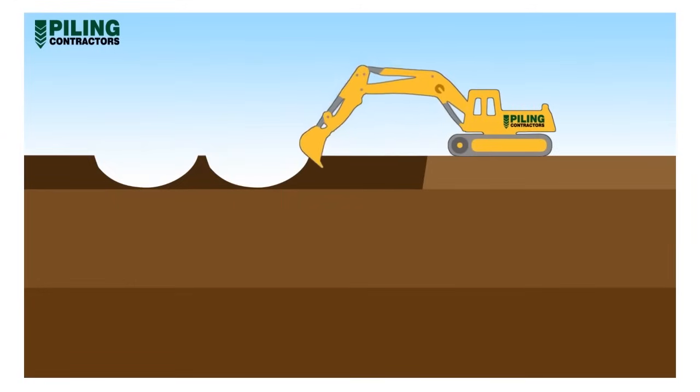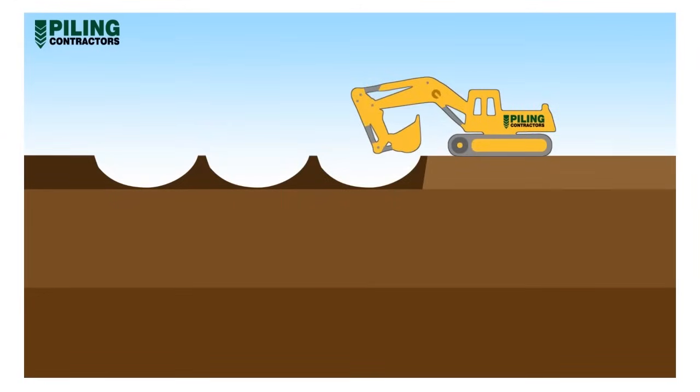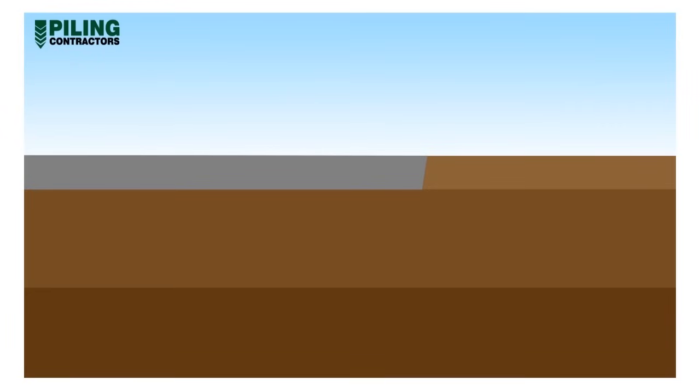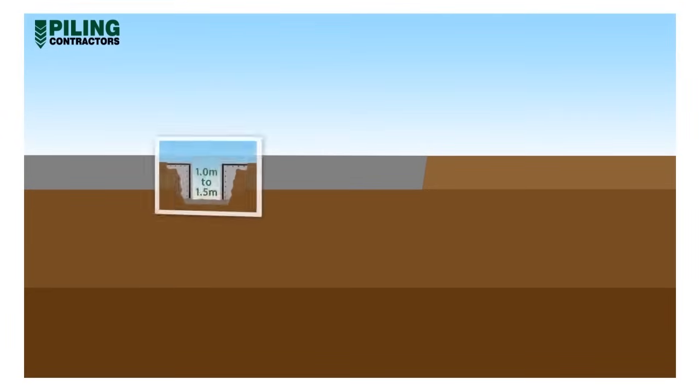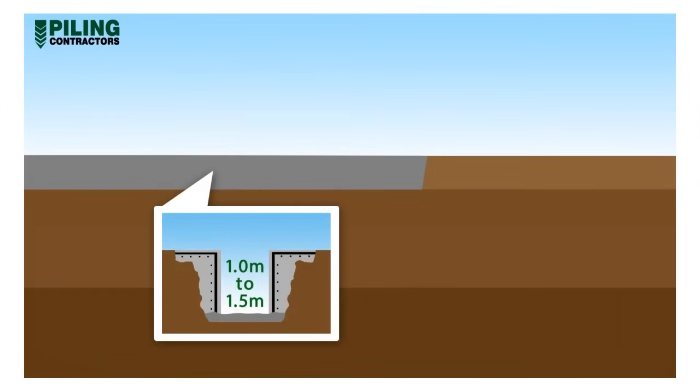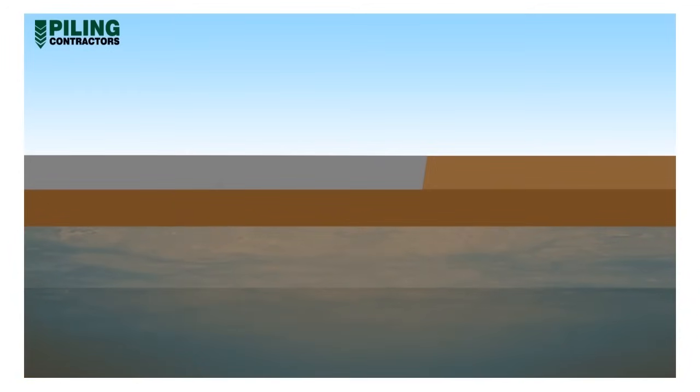The guide wall serves to locate the excavation equipment within acceptable tolerances before the retaining wall construction commences. The guide wall is made from reinforced concrete, typically 1 to 1.5 metres deep. Walls are constructed to tight verticality tolerance.